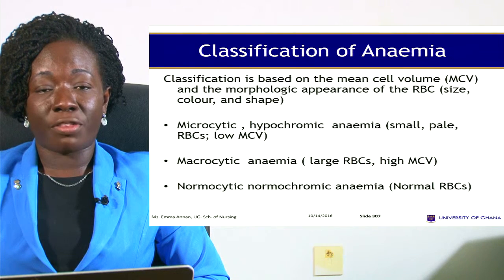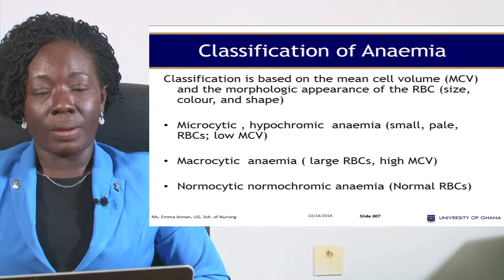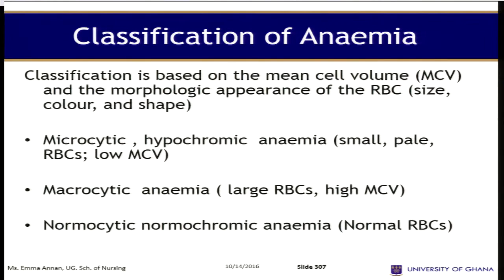Classification is also based on the mean cell volume (MCV) and the shape and appearance of the red blood cells — that is the size, color, and shape. Microcytic hypochromic anemia means small, pale red blood cells with low MCV. MCV is the mean corpuscular volume, a measure of the average volume of red blood cells. Macrocytic anemia means large red blood cells with high MCV. Normocytic normochromic anemia means normal-sized cells.